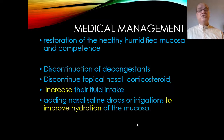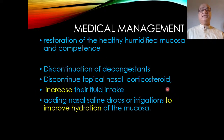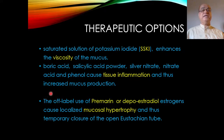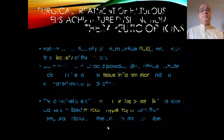Medical management of patulous Eustachian tube involves restoration of healthy humidified mucosa by discontinuing decongestants and topical nasal corticosteroids, increasing fluid intake, and adding nasal saline drops or irrigations to improve hydration. Saturated solution of potassium iodide enhances mucus viscosity. Boric acid, salicylic acid powder, silver nitrate, nitric acid, and phenol cause tissue inflammation and increase mucus production. Off-label use of Premarin or Depo-Estradiol — estrogens — causes localized mucosal hypertrophy, providing temporary closure of the Eustachian tube.